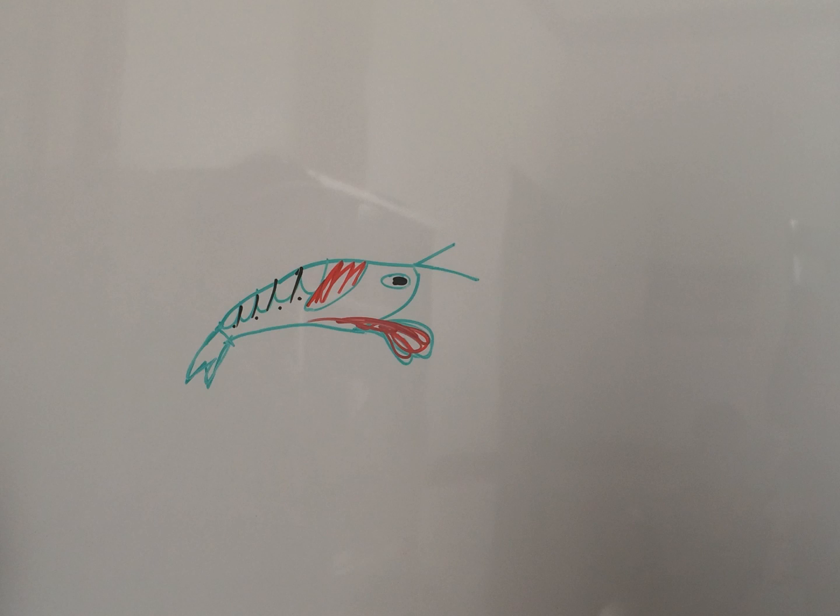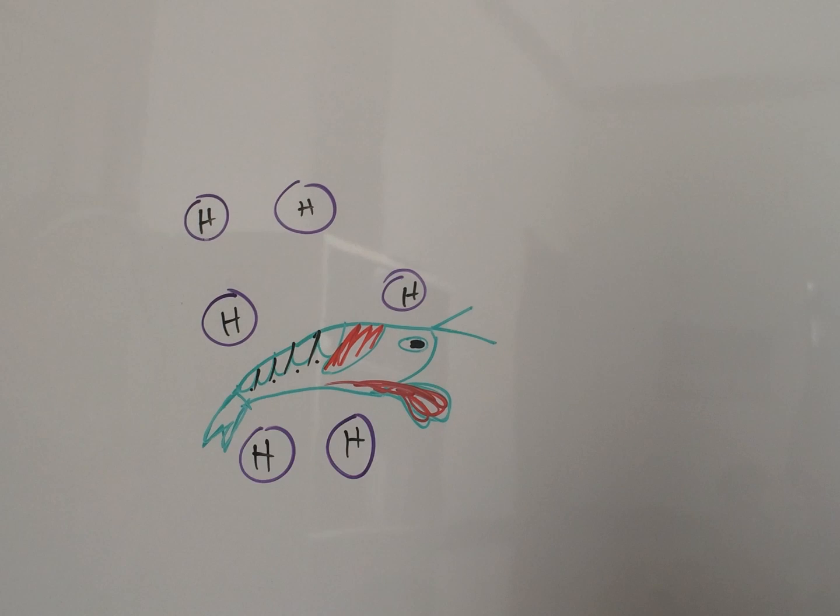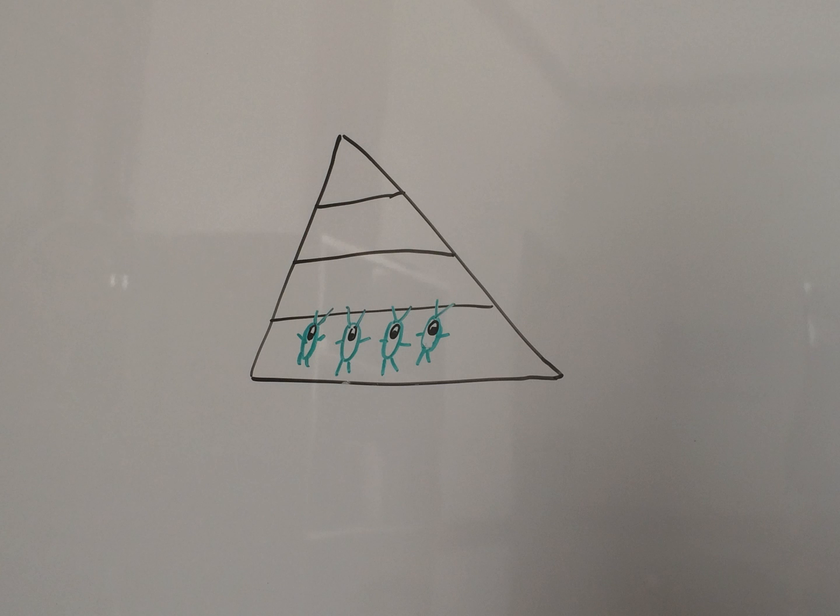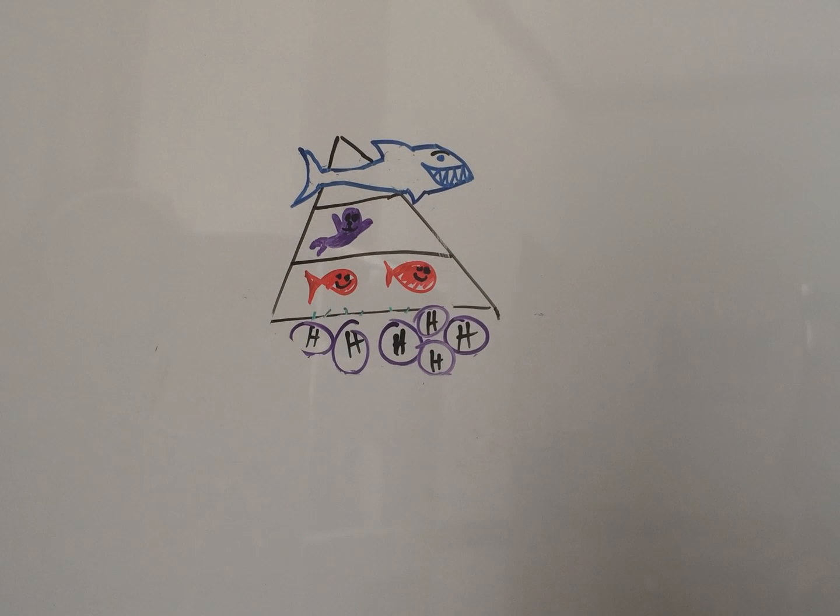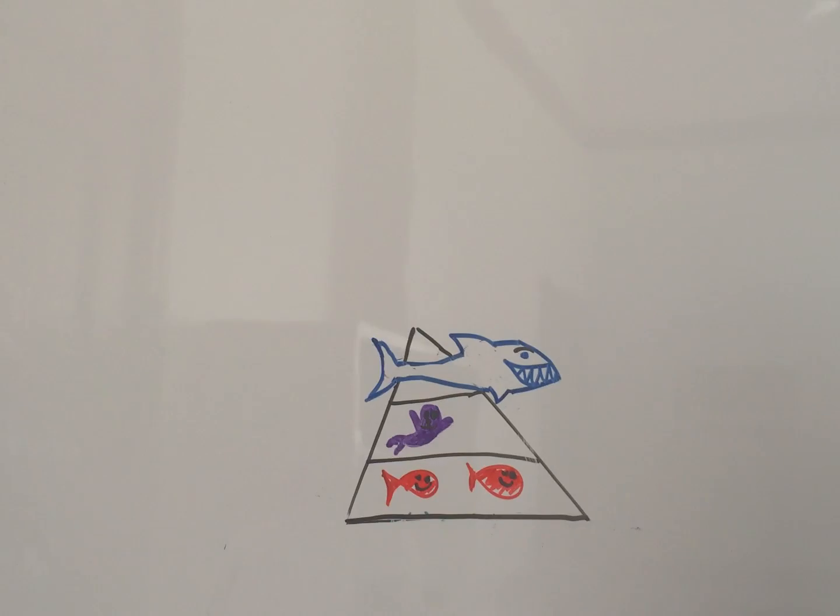Zooplankton have very thin exoskeletons, and the increased acidity of the ocean threatens to react with the calcium carbonate in their shells. Zooplankton are the base of the oceanic food chain, and without them, the food chain would collapse, affecting the vast majority of marine species.